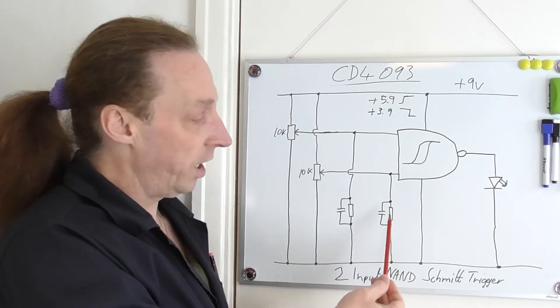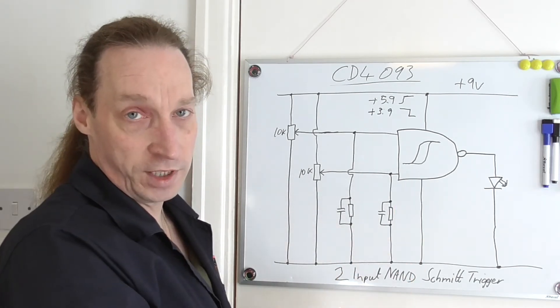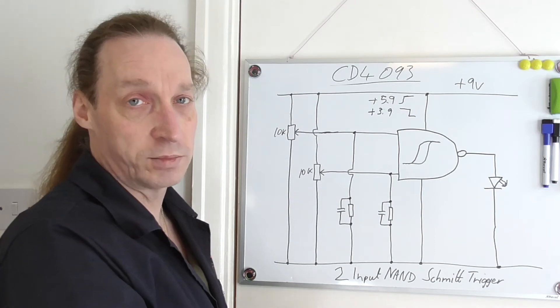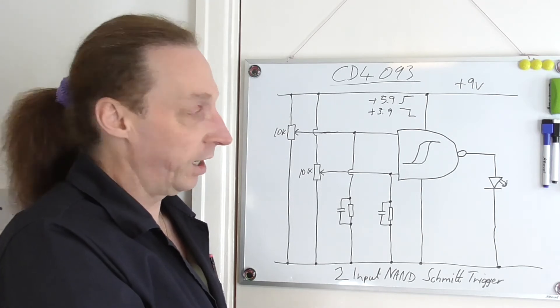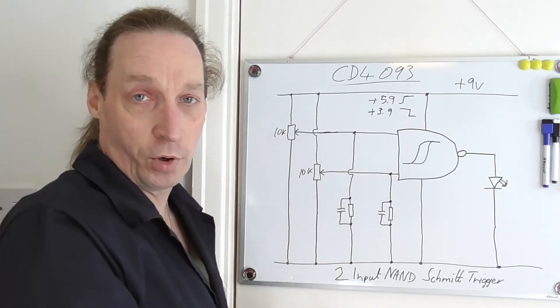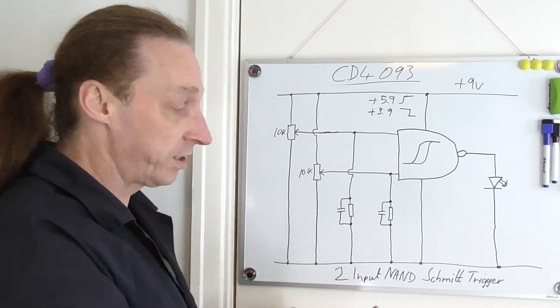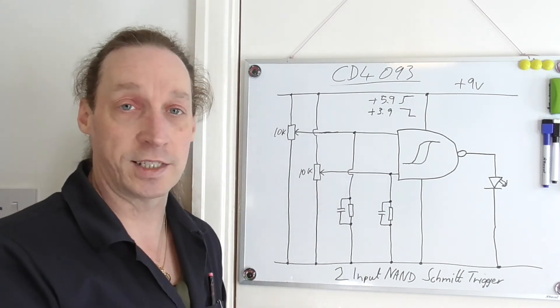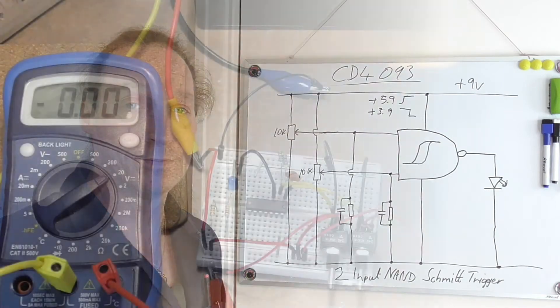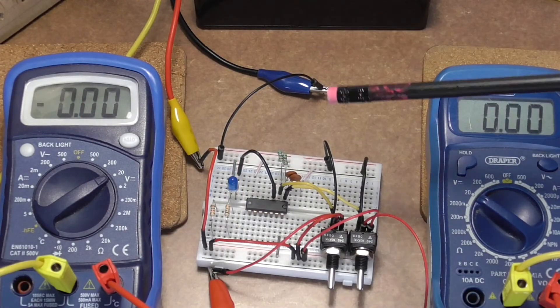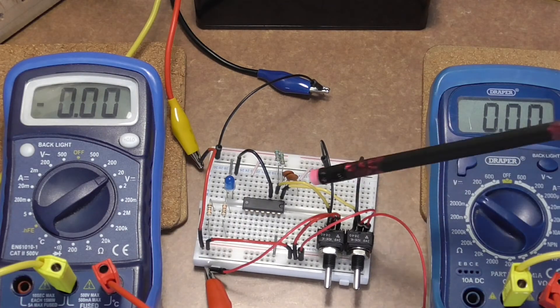The resistor capacitor here again is just to tie that input to ground just to make it stable. Like I've said on previous videos, I leave them on there for the inputs on these logic circuits because they just seem to work better and stay stable.